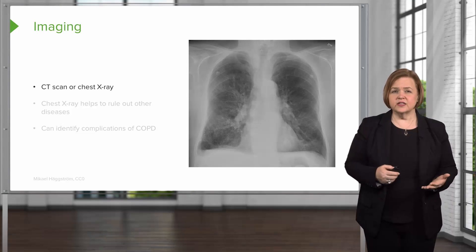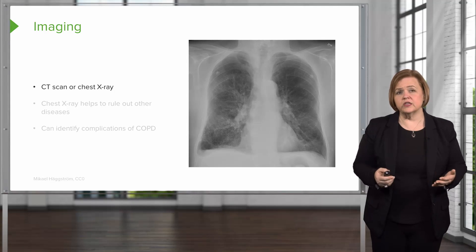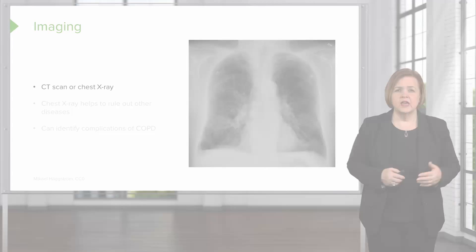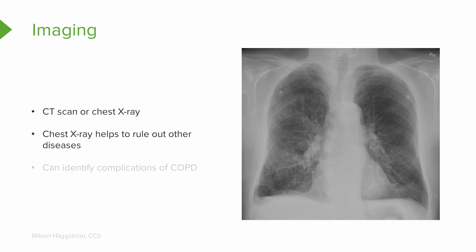A CAT scan or a chest x-ray are two examples of imaging that we use when diagnosing COPD. A chest x-ray will help us rule out other diseases — like maybe the patient has lung cancer, bronchiectasis, pleural disease, interstitial lung disease, or even heart failure. So if this patient is having shortness of breath, those are differential diagnoses we'd want to rule out, and a chest x-ray would help with that.